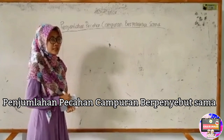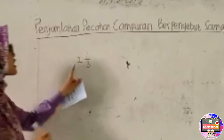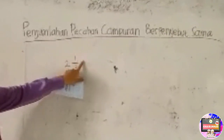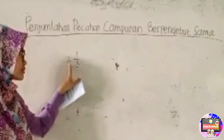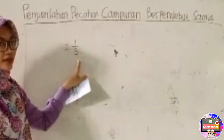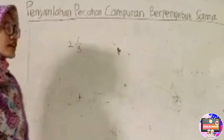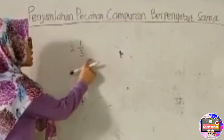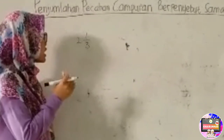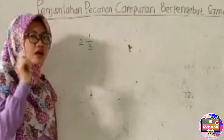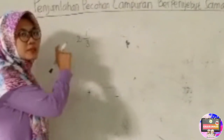Pecahan campuran itu yang seperti apa sih? Contoh pecahan campuran, misalnya ada pecahan campuran seperti ini. Ini namanya pecahan campuran: 2 1/3. Di paling depan, angka 2 ini merupakan bilangan asli, dan juga ada pecahan biasa. Sebelum kita menjumlahkan pecahan campuran, kita akan mencoba dulu untuk mengubah pecahan campuran menjadi pecahan biasa, karena langkah pertama kita harus mengubah pecahan campuran menjadi pecahan biasa.